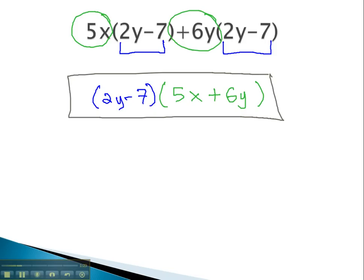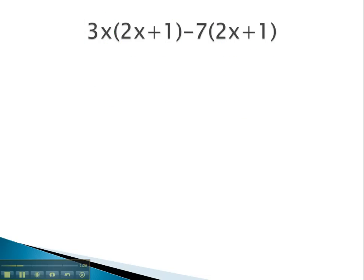Let's take a look at one more example, where we see this greatest common factor is a binomial that can come out front. Again, in this problem, we see the 2x plus 1 is in common on both parts. That group, the binomial 2x plus 1, is the greatest common factor.